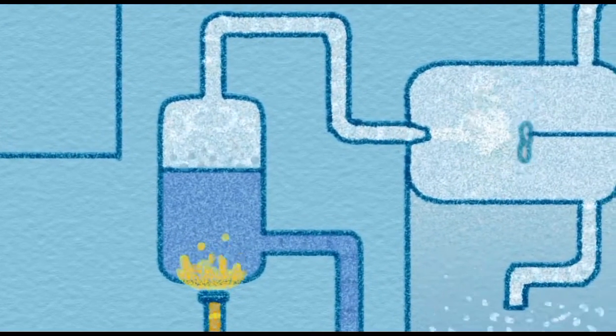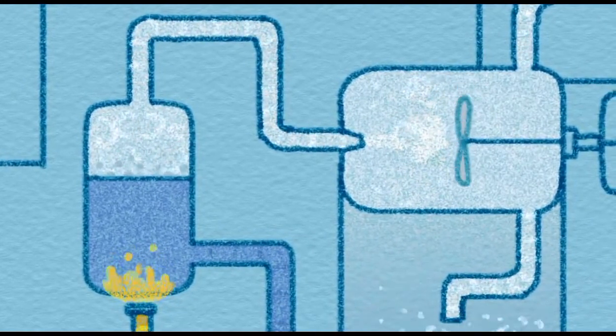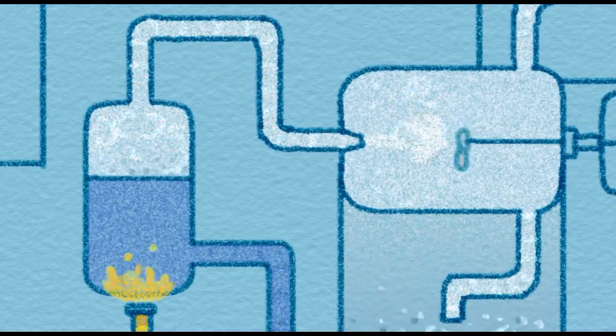The high-pressure steam goes into a turbine. The turbine has large bladed rotors, just like the sails of the windmill, which pushed by the steam rotate at a high speed.